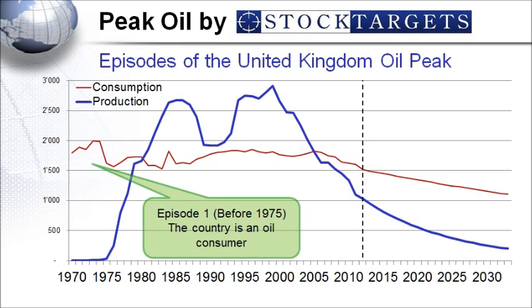The dotted line in 2012 is the production measured as of 2012, which is the latest figures we have. Episode number one: before 1975, the country is a net consumer of oil. The red line is higher than the blue one — the red line being the consumption and the blue one being the production — indicating that the country is consuming a lot more oil than it is producing.